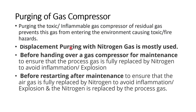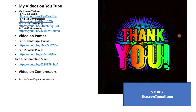Now let us talk about purging of a gas compressor. For toxic or flammable gas compressors, purging is very essential to prevent gas from entering the environment and causing toxic or fire hazards. Displacement purging with nitrogen gas is commonly used. Before handing over a gas compressor for maintenance, nitrogen is filled into the compressor to ensure the process gas is fully displaced, avoiding the risk of inflammation or explosion. After maintenance, air is fully replaced by nitrogen, and then the process gas replaces the nitrogen before startup.